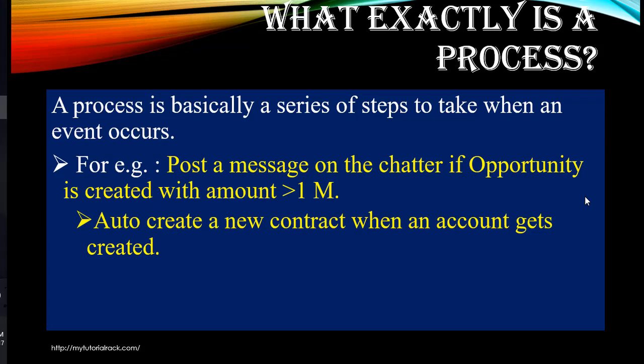Another example is to auto-create a new contract when an account gets created. So whenever you create a new account record, simultaneously you also want to create a contract associated with that account. That is another example of a process.